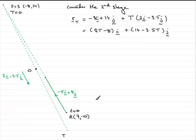Now when the particle is due south of A, we know that the coordinate of this point, the i component, will be 7 units.